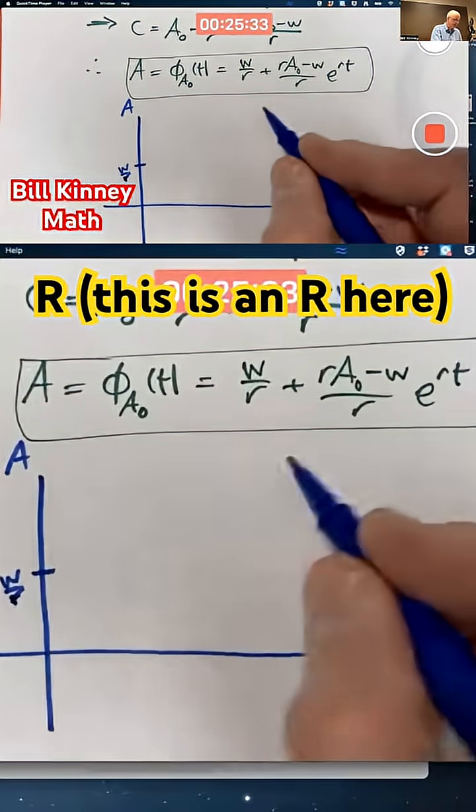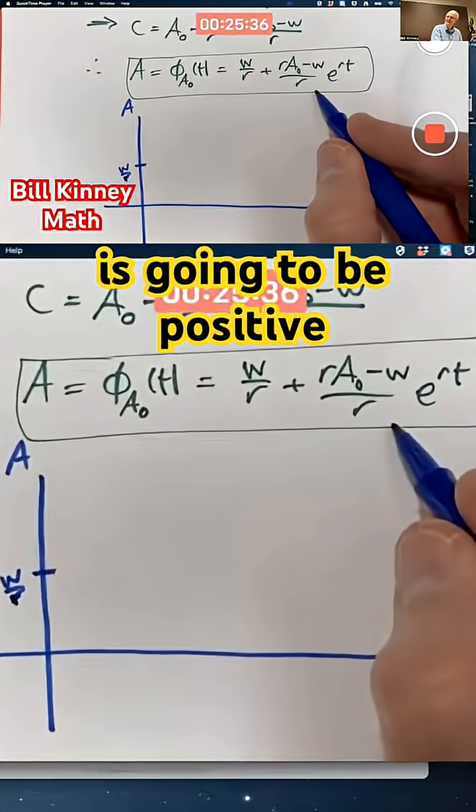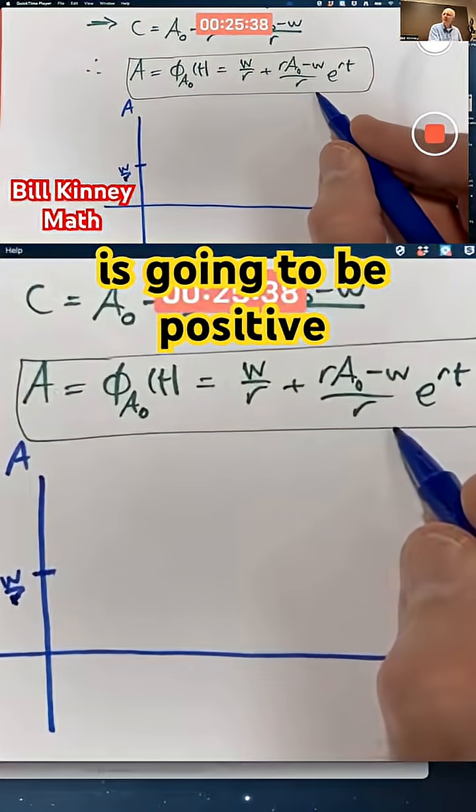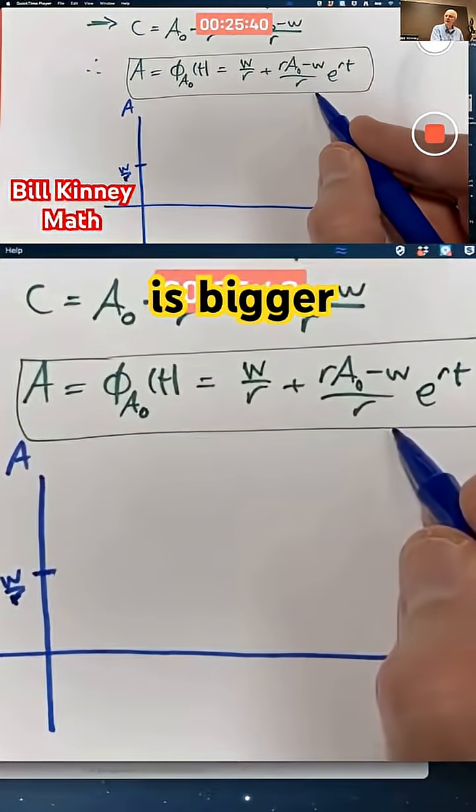This is an r here, and this coefficient's going to be positive when a naught is bigger than w over r.